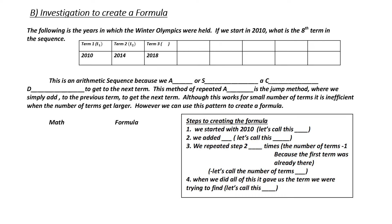There is a formula that can be used for all arithmetic sequences. We're going to use a situation to create the formula. Our situation is: the following are the years in which the Winter Olympics was held. If we started at 2010, what would be the eighth term in the sequence? Olympics are held every four years. We started with 2010 — that would be considered our first term, or T to the 1.